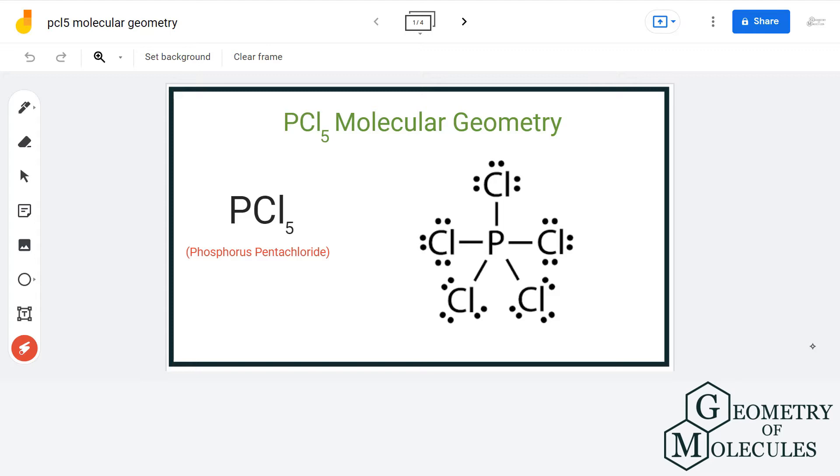This is the Lewis structure of PCl5, where phosphorus is forming single bonds with five chlorine atoms and there are no lone pairs on phosphorus.